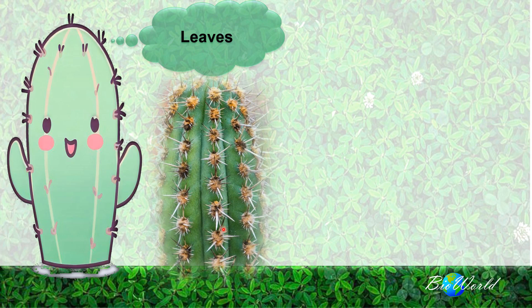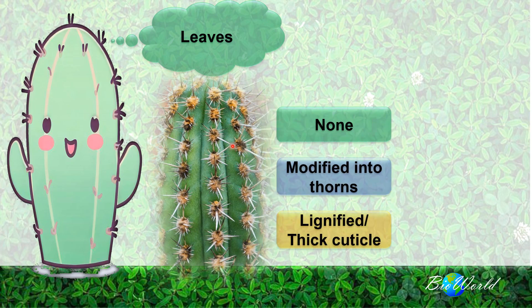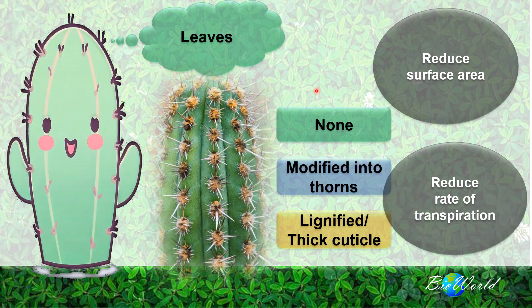Here is a picture of a xerophyte. As you can see, there are no leaves. Instead, the leaves have been modified into thorns, and these thorns are either lignified or have a thick layer of cuticle. By this adaptation, the surface area is reduced, which in turn reduces the rate of transpiration, and water loss by evaporation is minimized.